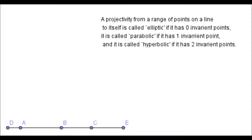This time we're going to have a look at one-dimensional projections. These are projections from a range of points on a line to a range of points on a line. By classifying and understanding these objects, we're going to gain a lot more understanding of relationships between projections and harmonic sets, and we'll also introduce concepts like involutions, which turn out to be rather fundamental in projective geometry.